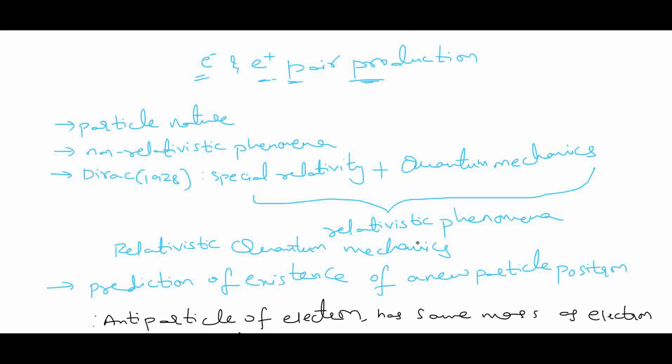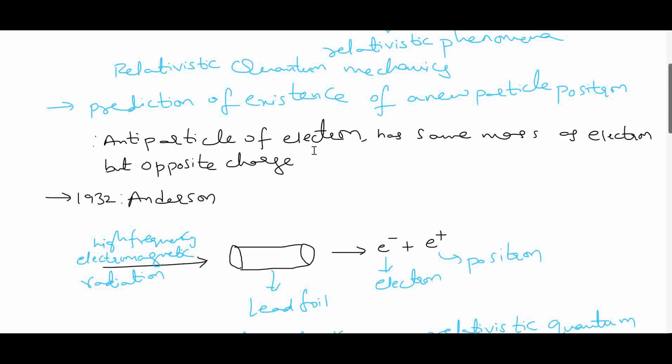By understanding relativistic quantum mechanics, the existence of a new particle called positron is predicted. This is the antiparticle of electron. It has the same mass as that of electron but opposite charge, that is positive charge.